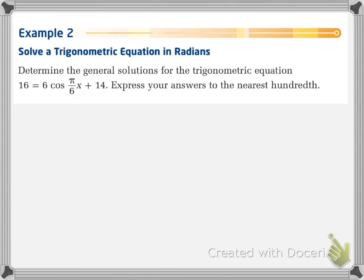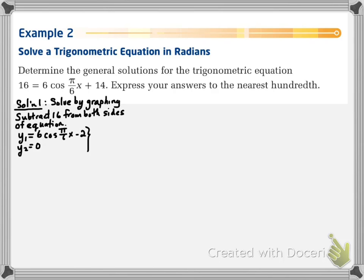In example 2, solve a trig equation in radians. Now, determine a general solution for this trig equation. Again, we're going to solve it algebraically and graphically and express our answers to the nearest hundredth. This text is a big clue as we're not looking for exact answers in this case. So, in solution 1, we can make y1 equal to 16 and y2 equal to 6 cos(π/6·x) + 14. Or, we could subtract 16 from both sides and work with it that way. That's what I'm going to do. So, y1 is 6 cos(π/6·x) minus 2, and y2 will just simply be equal to 0. Again, we'll find all the x-intercepts.